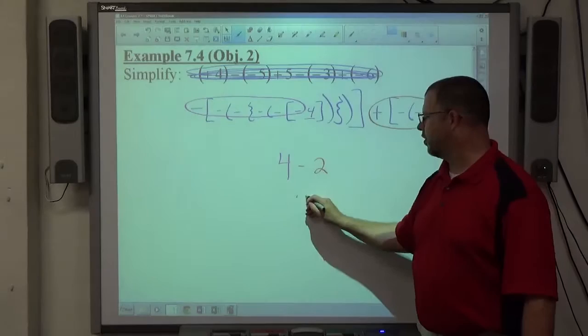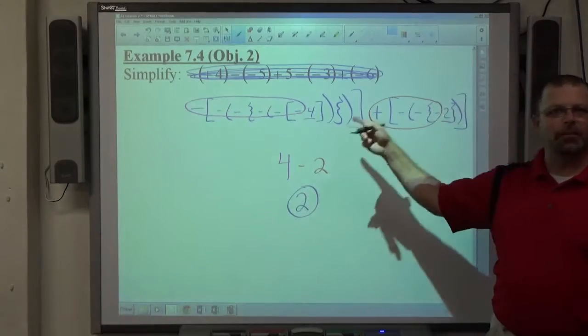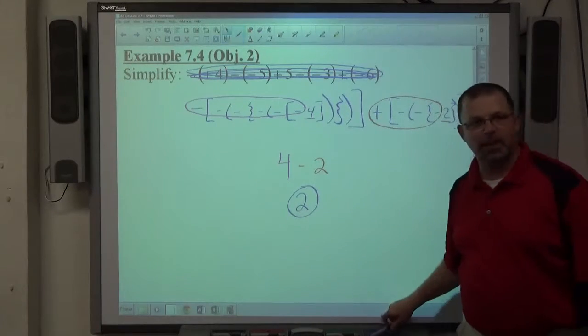And 4 minus 2 is equal to 2. Even when they look big and ugly like this, they are not that difficult to do.